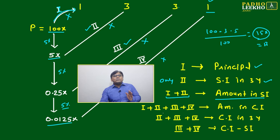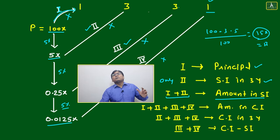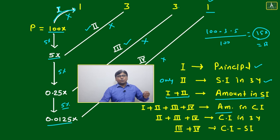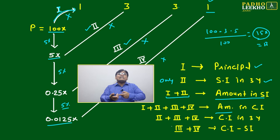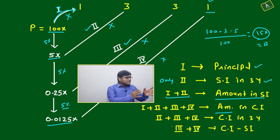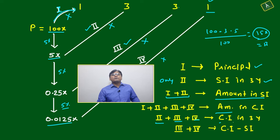Now, Lines 1 + 2 + 3 + 4 added together give you the amount under compound interest — total amount means principal plus interest. Or you can say: principal plus simple interest plus interest on simple interest equals compound interest. Principal plus SI gives the SI amount; adding interest on SI gives the CI amount.